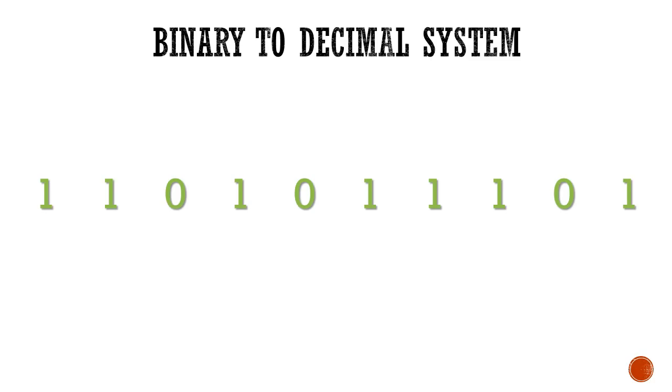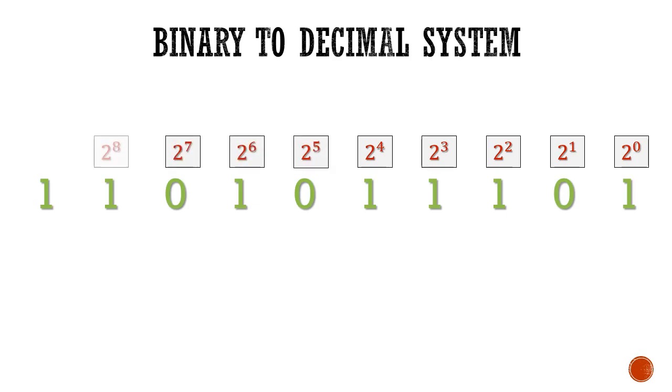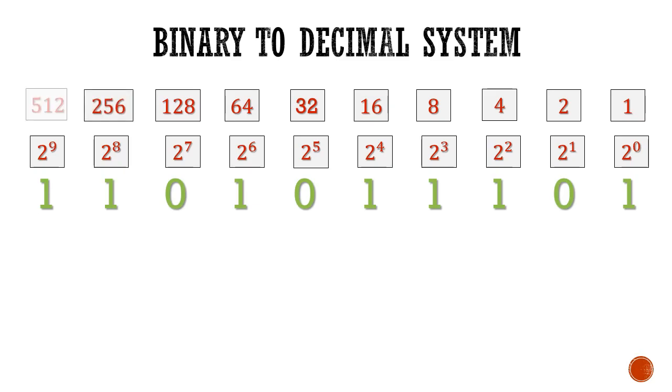I will be using the powers of 2 in order to write it in decimal system once again. Starting from extreme right, I will write powers of 2: 2 raised to power 0, 2 raised to power 1, 2 raised to power 2 and so on up to 2 raised to power 9. We know that 2 raised to power 0 is equal to 1, 2 raised to power 1 is equal to 2, 2 raised to power 2 is equal to 4 and so on, and finally 2 raised to power 9 is equal to 512.